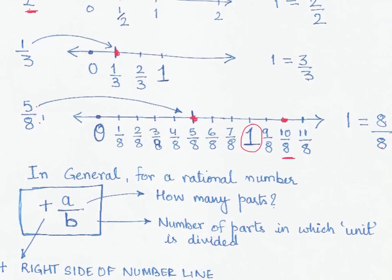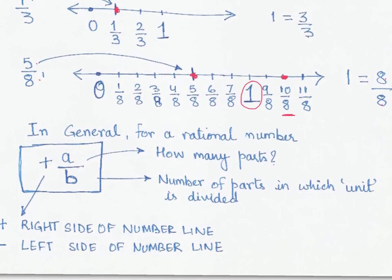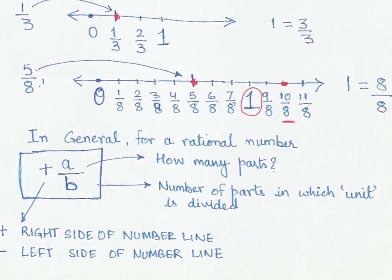In general, for a rational number a/b, the numerator tells how many parts you mark on the number line, and the denominator tells the number of parts into which the unit distance is divided. Rational numbers exist between numbers we have already studied — between zero, one, two, or any two consecutive whole numbers or integers. So given a/b, divide a unit distance into b equal parts, then locate a parts — that gives the position of a/b.